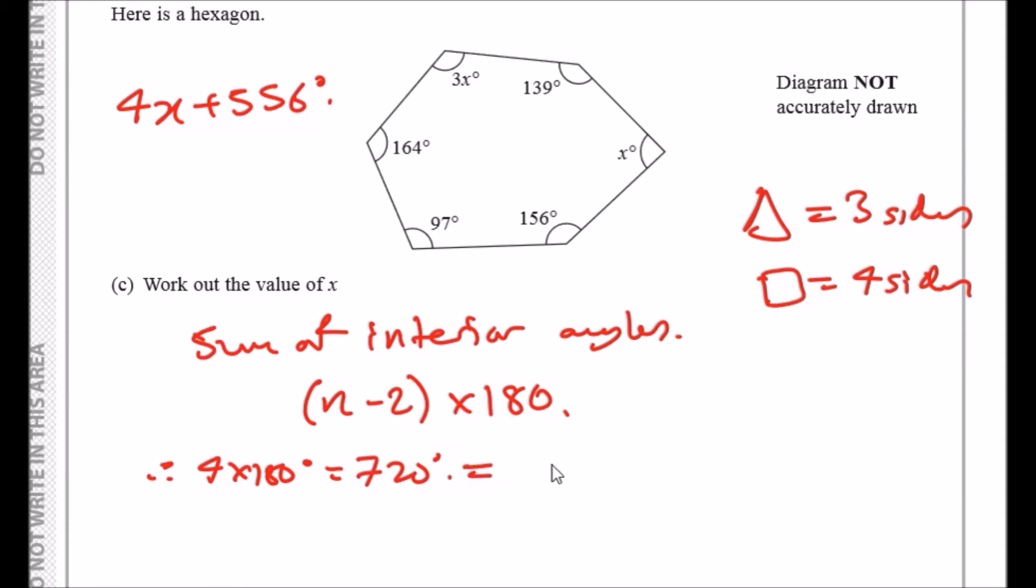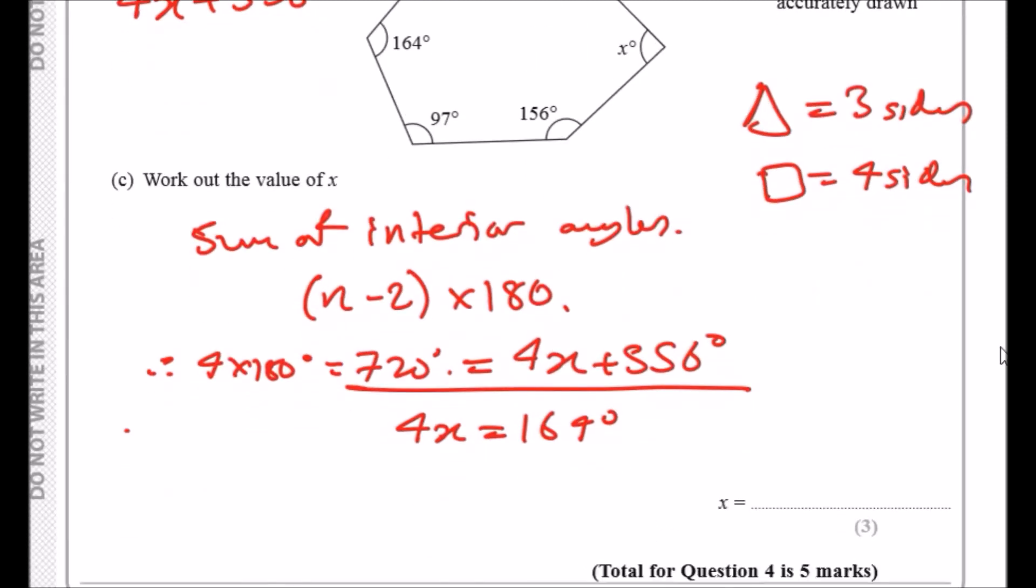On my calculator I got 556 degrees, so hopefully that's correct. So that means 720 equals 4x plus 556 degrees. Now just do some simple algebra. Take 556 from 720, you should get 164, so 4x equals 164 degrees. And then dividing it by 4 will give us 41.